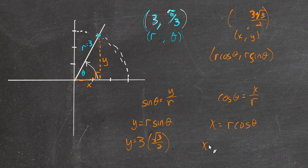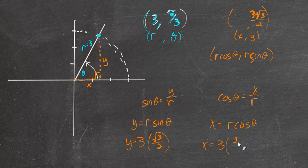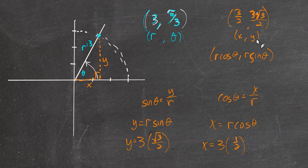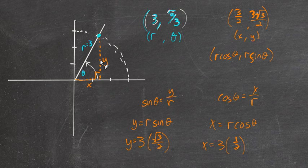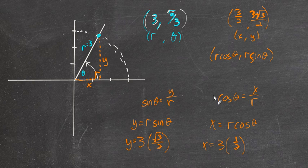This would be r, which is 3, times the cosine of π/3, which is 1/2. That's 3/2. So we've got 3/2 comma 3√3/2. That would be 3/2 this way, which drawing is pretty close to being 3/2. And 3√3/2 this way, which would be really close to 3. So, good. There's an example of translating from polar to rectangular coordinates.